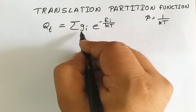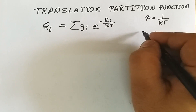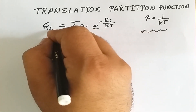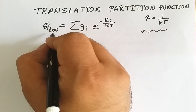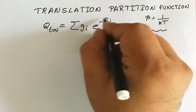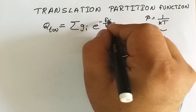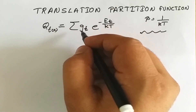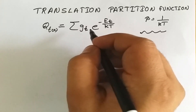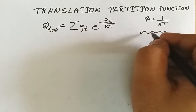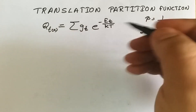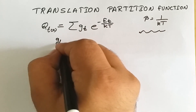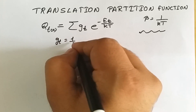Here e_i is our translation energy and g_i is our statistical weight factor. If we consider that the particle is performing translational motion along the x-axis, we write subscript x for translation along x-axis. When a particle is performing translational motion, the degeneracy of the energy levels is always unity — meaning particles are moving in only one energy level and the energy levels are not further divided into several sub-states.